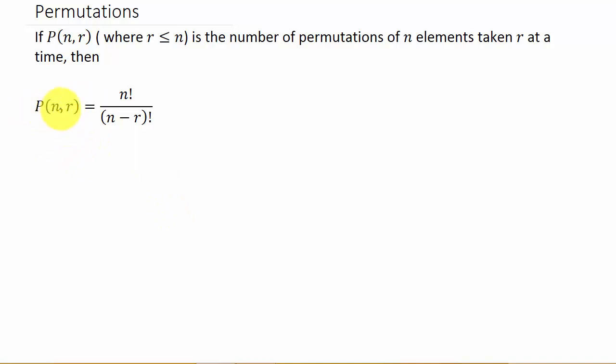Now the way that I've written this P(n,r), I wrote it like this because in OneNote it just didn't look good the other way. But the other way that you might see the permutation written is like this, with n things chose r. I just did this because it was not coming out good when I was trying to type it.